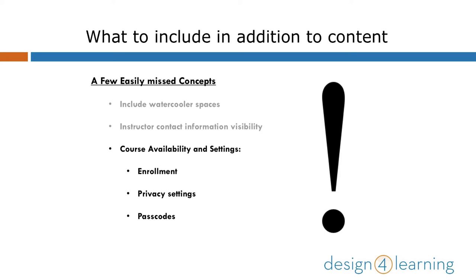As far as course availability and settings in an LMS or OLE, there can be a lot to cover, and most of the types of settings can vary widely depending on the system of your choice. You should always keep an eye out for enrollment settings and ensure that your students are all properly enrolled and receiving information. Often this can be done with a test run — try creating a discussion post and asking for everyone to reply if they received it.